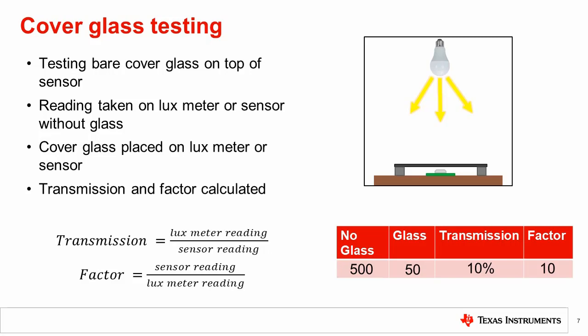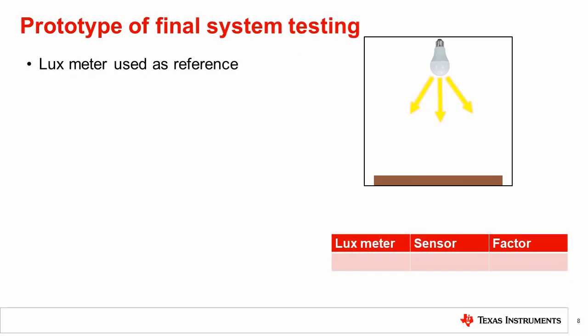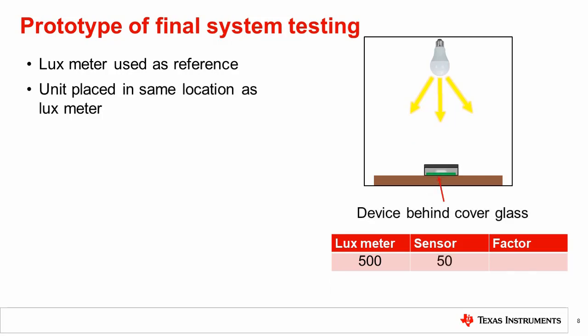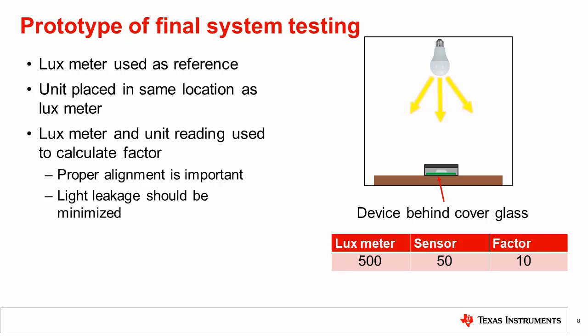If a prototype or final system is needed to be tested, the setup is slightly different. Here, the lux meter is used to take a reference reading. The lux meter can either be compensated or placed in the same location as the glass. For simplicity, we show the latter method. The height of the lux meter needs to be aligned with the surface of the unit. The lux meter also needs to be placed at the same location as the sensor in the X and Y position. Care should be taken to minimize light leakage from the sides and from any other light sources, as mentioned in the previous chapter.